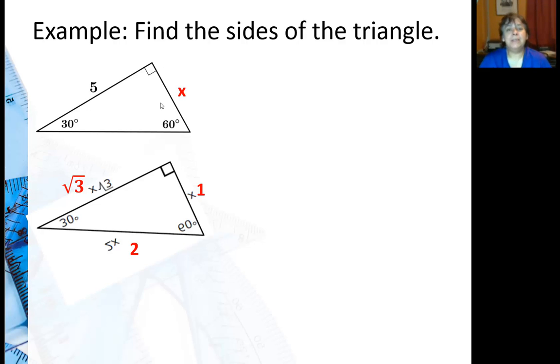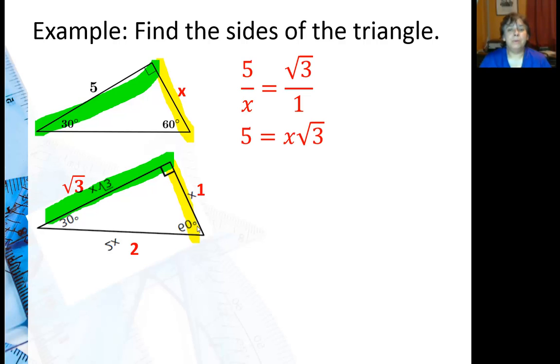I'm going to put x here for the side I'm looking for. And you can see my corresponding sides, I can set up a proportion. 5 over x is the same as square root of 3 over 1. Cross multiply. Then I have to divide both sides by square root of 3, and I get x equals 5 over square root of 3, which is the answer.